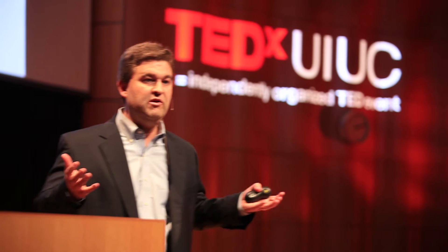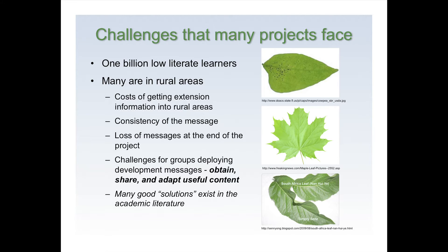The first challenge is there are about one billion low-literate learners on the planet. They speak different languages, have diversity of different cultures, and it's very challenging to get information out to people that are not literate. Many of these people live in rural areas, which means getting extension information into their hands can be very challenging and expensive. There's also a challenge associated with consistency of messages — if I train somebody in a message and they pass it on, that message will change over time. And one fundamental problem with these projects is that at the end of the project, extension materials are often lost. I can create wonderful extension materials, have impact on people, then move on in my career, and that information is lost.